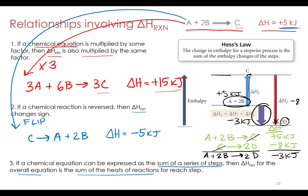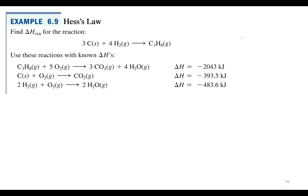This approach to determining enthalpy change is known as Hess's Law. Let's apply that to an actual example. We're going to find the enthalpy change for the reaction: 3 carbon plus 4 hydrogen produces 1 mole of propane (C₃H₈), using a set of three given reactions.